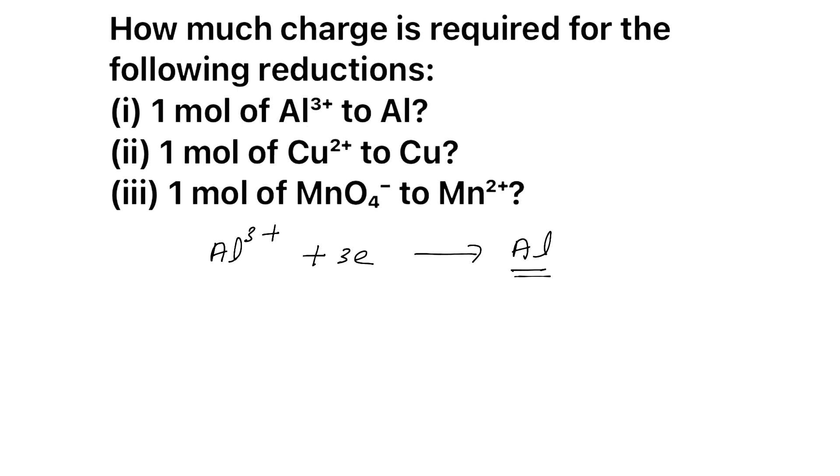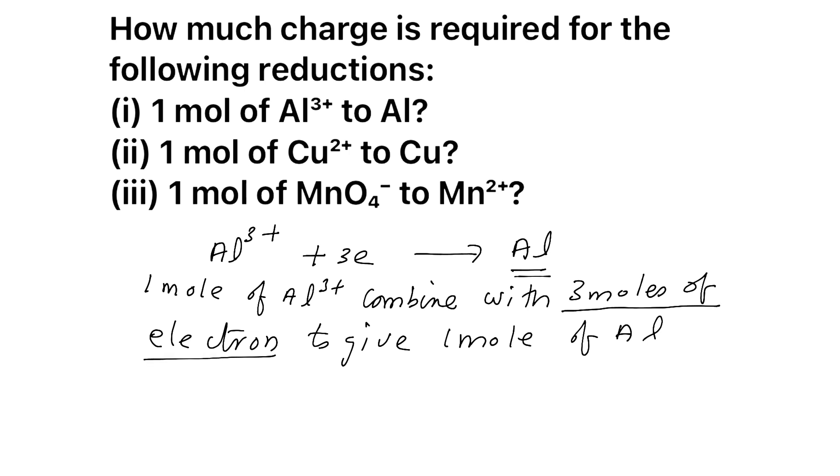But as per the question, see what is the number of Al³⁺? It is 1 mol of Al³⁺. So you have to read this equation like 1 mol of Al³⁺ combined with 3 mols of electron to give 1 mol of Al, clear? So how many electrons are involved? 3 mols of electron.